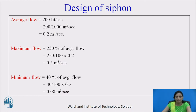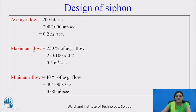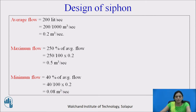List out the given data and calculate average flow, maximum flow, and minimum flow. Average flow is given as 200 liters per second, so average flow is 0.2 m³/s. Maximum flow is 250% of average flow, so 250% of 0.2 is 0.5 m³/s. Minimum flow is 40% of average flow, so 40% of 0.2 is 0.08 m³/s.